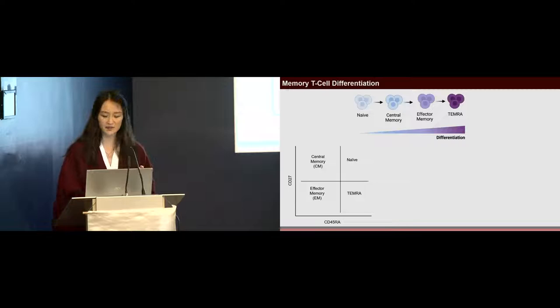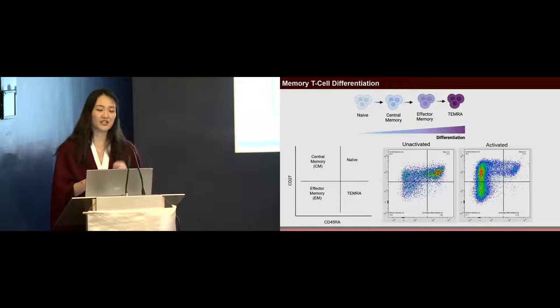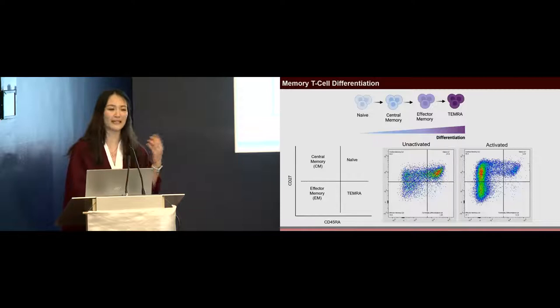Cells from a healthy individual that are unactivated are mainly naive cells, with some cells residing in the central memory and effector memory compartment. However, once you activate these cells, they shift away and differentiate away from the naive compartment and lie more in the central memory and effector memory compartment.